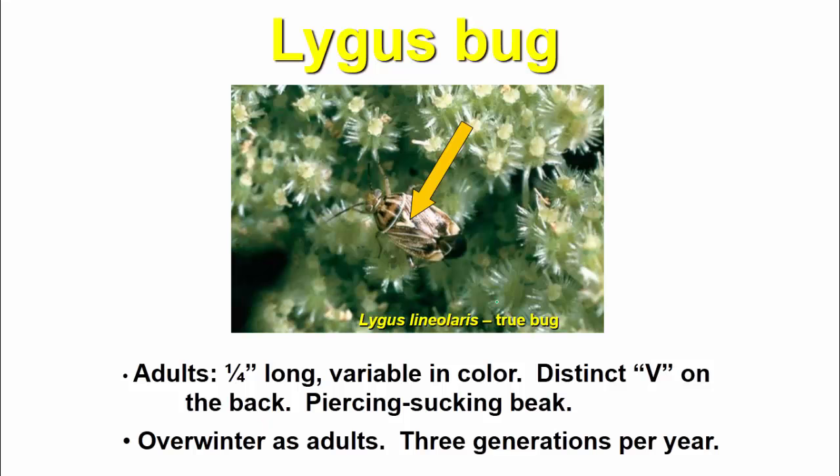Next is the lygus bug. Adults are 1 and 1/4 inch long with variable color and a distinct V on the back. It has a piercing and sucking mouthpart. It overwinters as adults and has 3 generations per year.